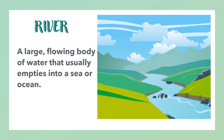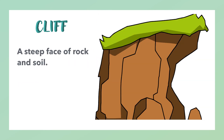River: a large, flowing body of water that usually empties into a sea or ocean. Cliff: a steep face of rock and soil.